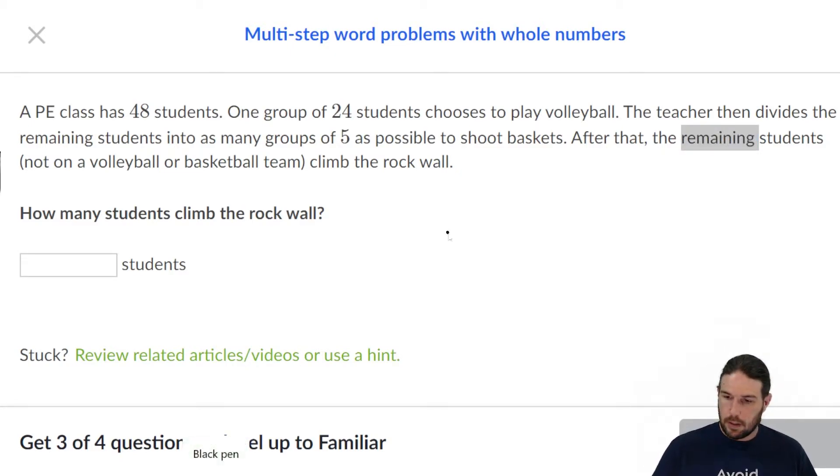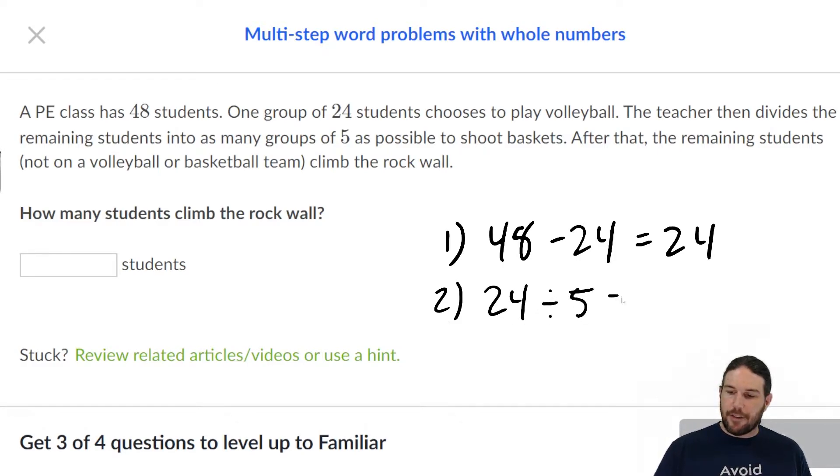So first off, they want us to do 48 minus 24, right? That equals 24, no problem. 24 people went off to play volleyball. Then, the second step is we're going to take that 24 and divide it by five.